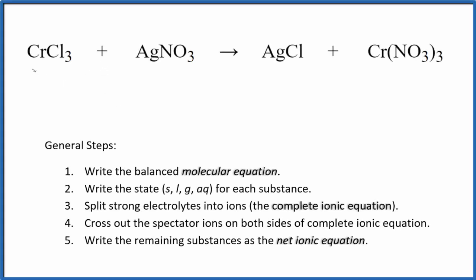Let's balance the net ionic equation for CrCl3 plus AgNO3. This is chromium chloride and we have silver nitrate. The first thing we do when we balance net ionic equations, we need to balance the molecular equation. This is the molecular equation.